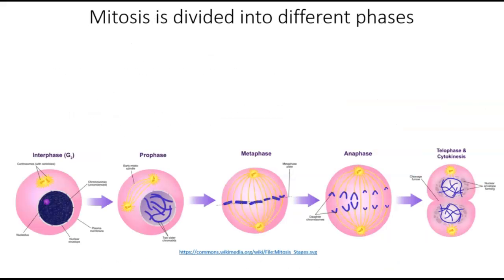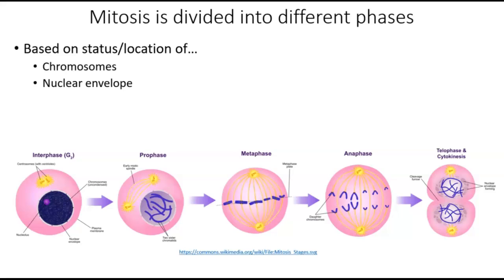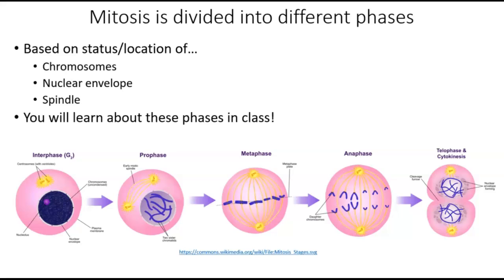Scientists have divided the events of mitosis into different phases based on the status and location of the chromosomes, the nuclear envelope, and the spindle. These phases are shown below just to give you a preview, but you will learn more about them — what happens during each one and how to identify them — in class. So that's everything you need to know as an introduction to mitosis, and we'll learn much more about this in class. Until then, take care of yourself and take care of each other.